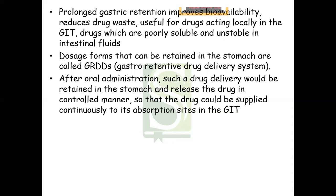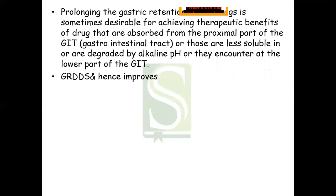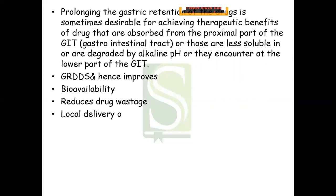After oral administration, such a drug delivery system would be retained in the stomach and release the drug in a controlled manner, so that the drug could be supplied continuously to its absorption site in the GIT. Prolonging gastric retention is desirable for drugs absorbed from the proximal GIT, or those less soluble in or degraded by the alkaline pH encountered at the lower GIT. GRDDS improves bioavailability, reduces drug wastage, and locally delivers the drug to the stomach and intestine.